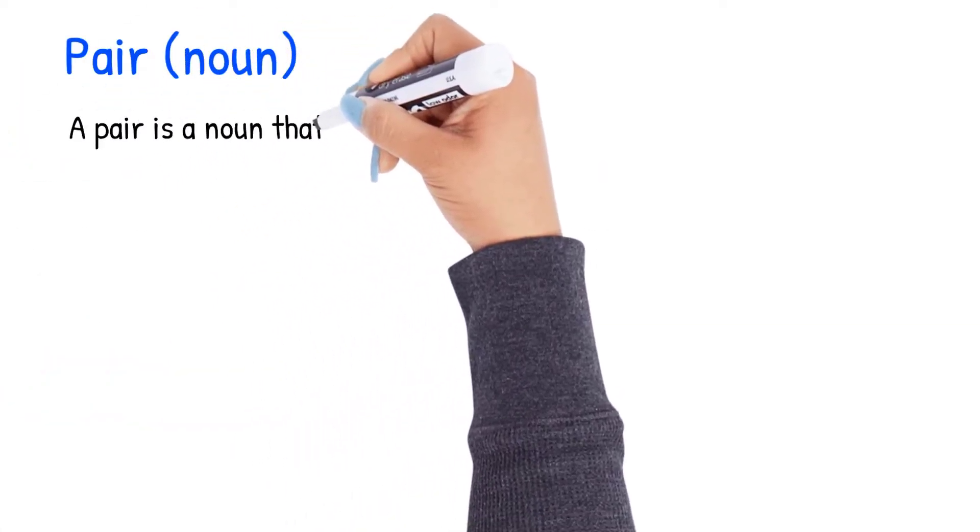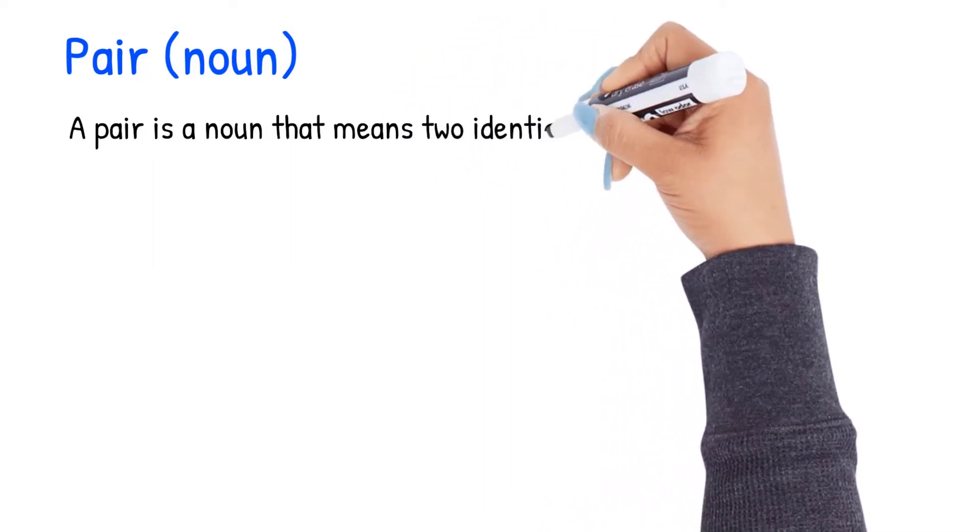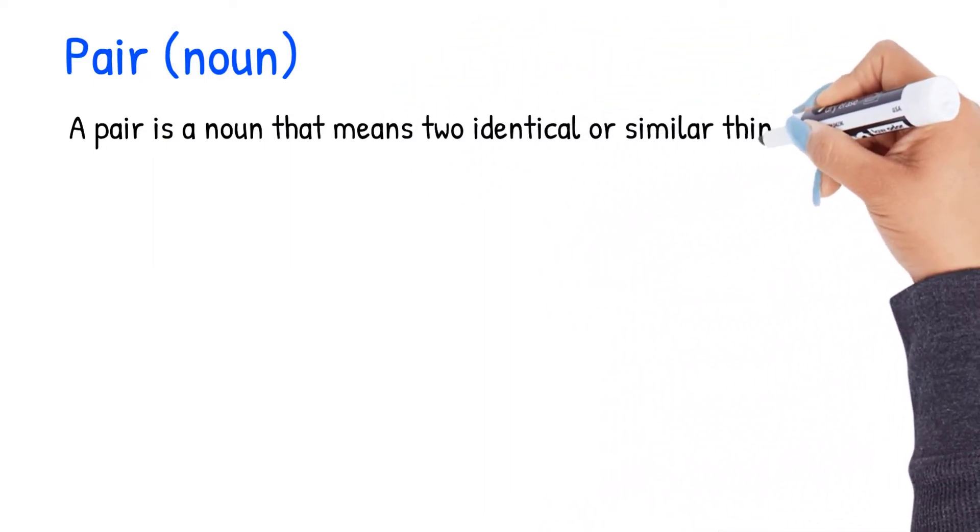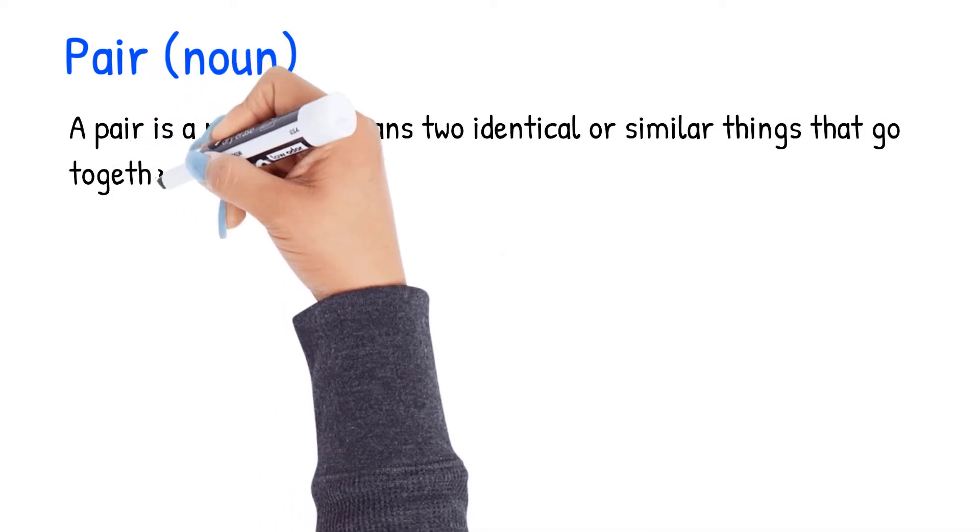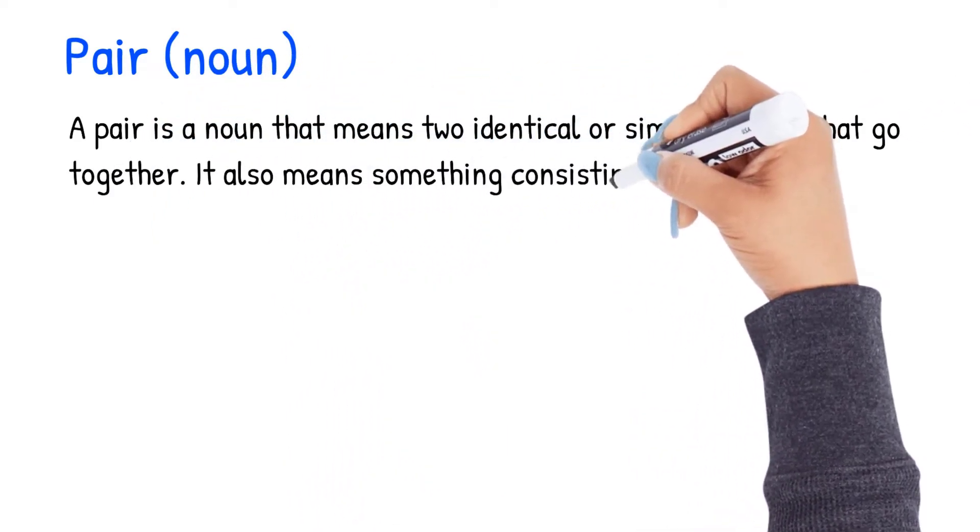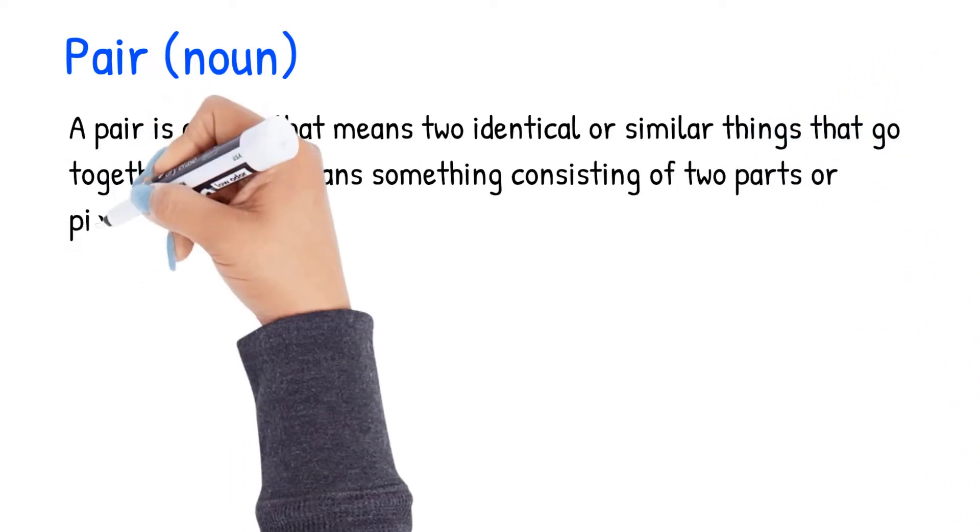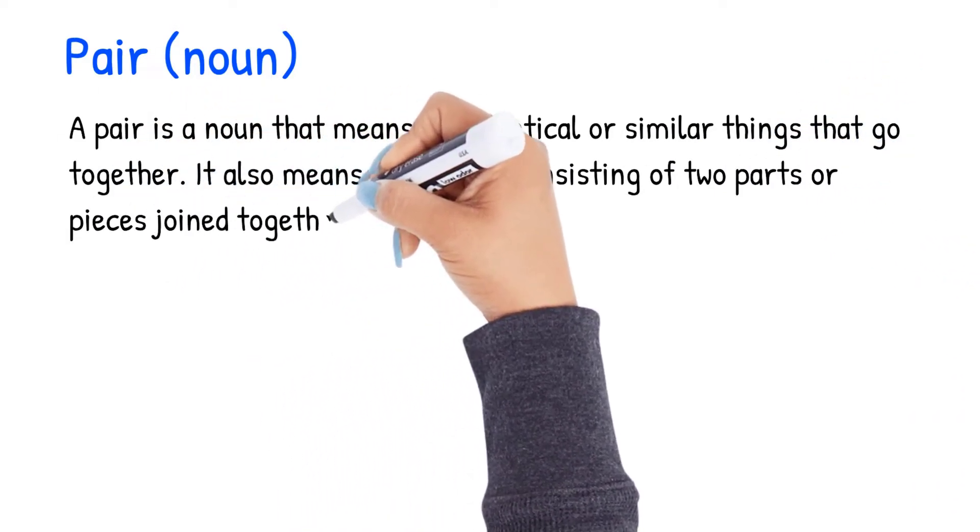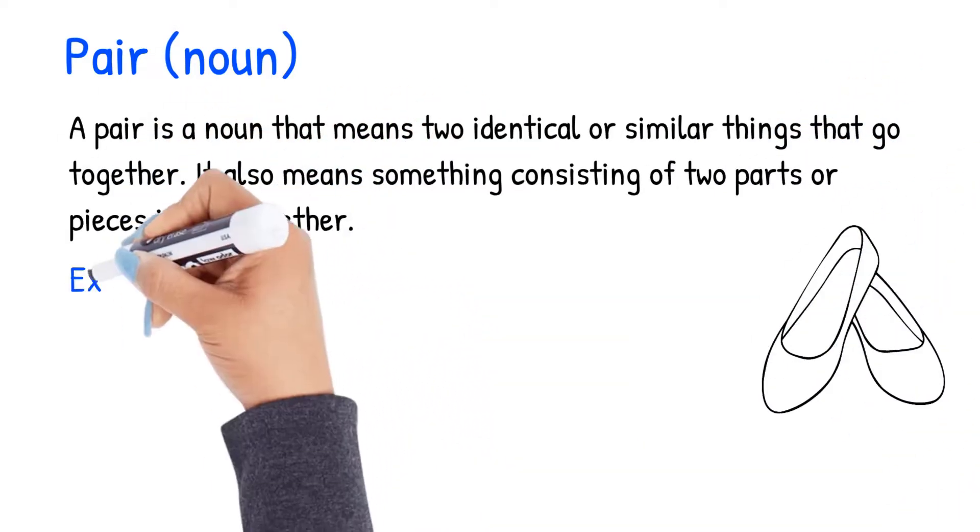Pair spelled P-A-I-R can be a noun or a verb. As a noun it means two identical or similar things that go together. It also means something consisting of two parts or pieces joined together.